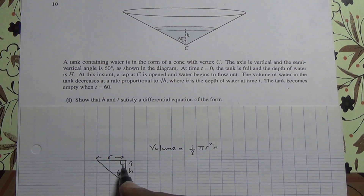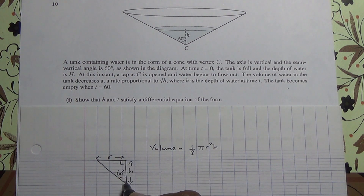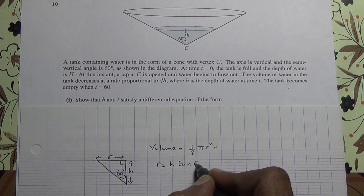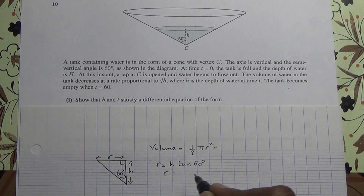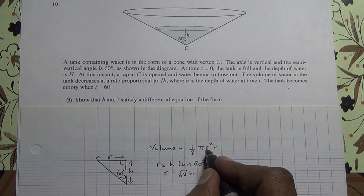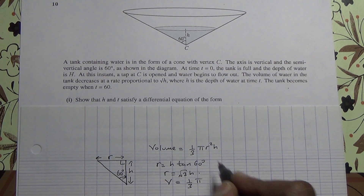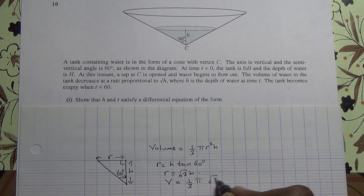So how can we find r? By using trigonometry, we can say this is opposite and this is the adjacent. So r is equal to h times tan of 60 degrees, which means r is going to be equal to root 3 times h. So we can immediately put r into this formula by saying V equals one-third pi r squared, which is root 3h squared, times h.